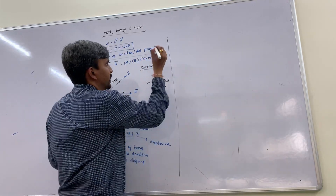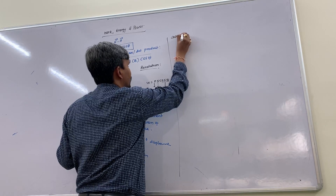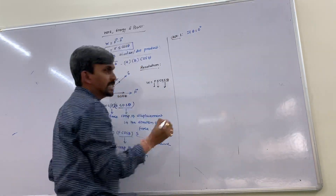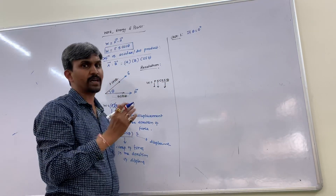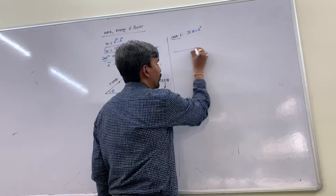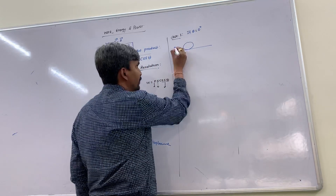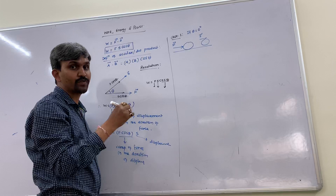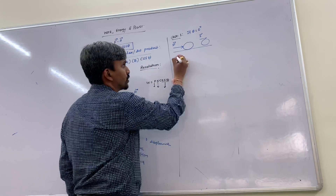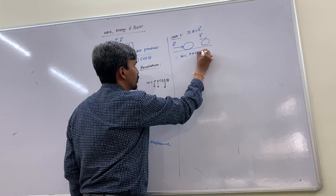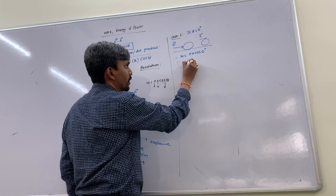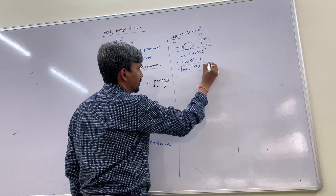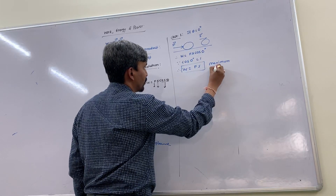Case 1: If θ = 0°, force and displacement are in the same direction. If I apply force to a body and it moves in the same direction, the angle between them is zero. So W = F·S·cos0° = F·S·1 = F·S. This is called maximum work done.